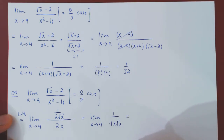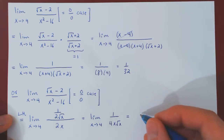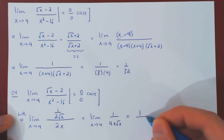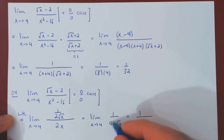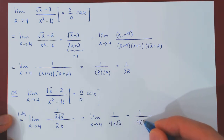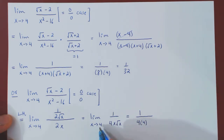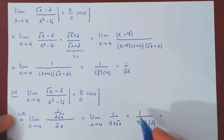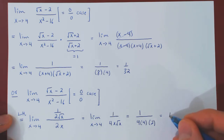The limit now is trivial. As x approaches 4: 1 stays 1, 4 stays 4, x approaches 4, and root of x approaches root of 4, which is 2. So we have 1 over 4 times 4 times 2, which is 1 over 32.